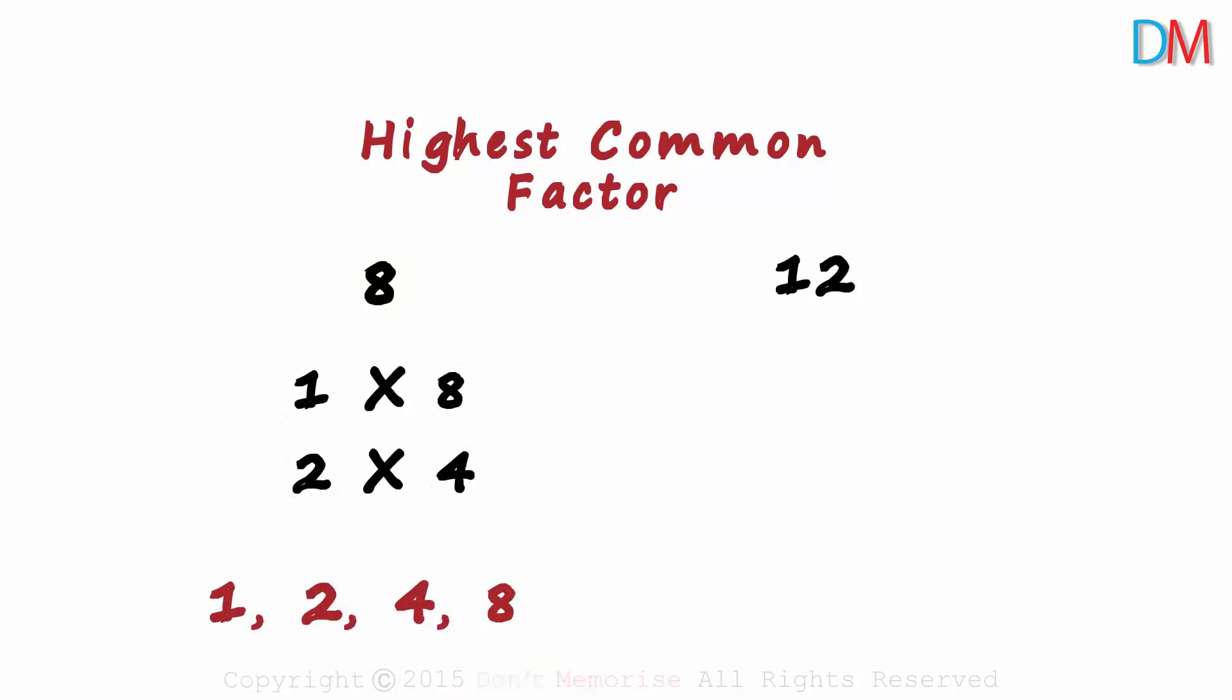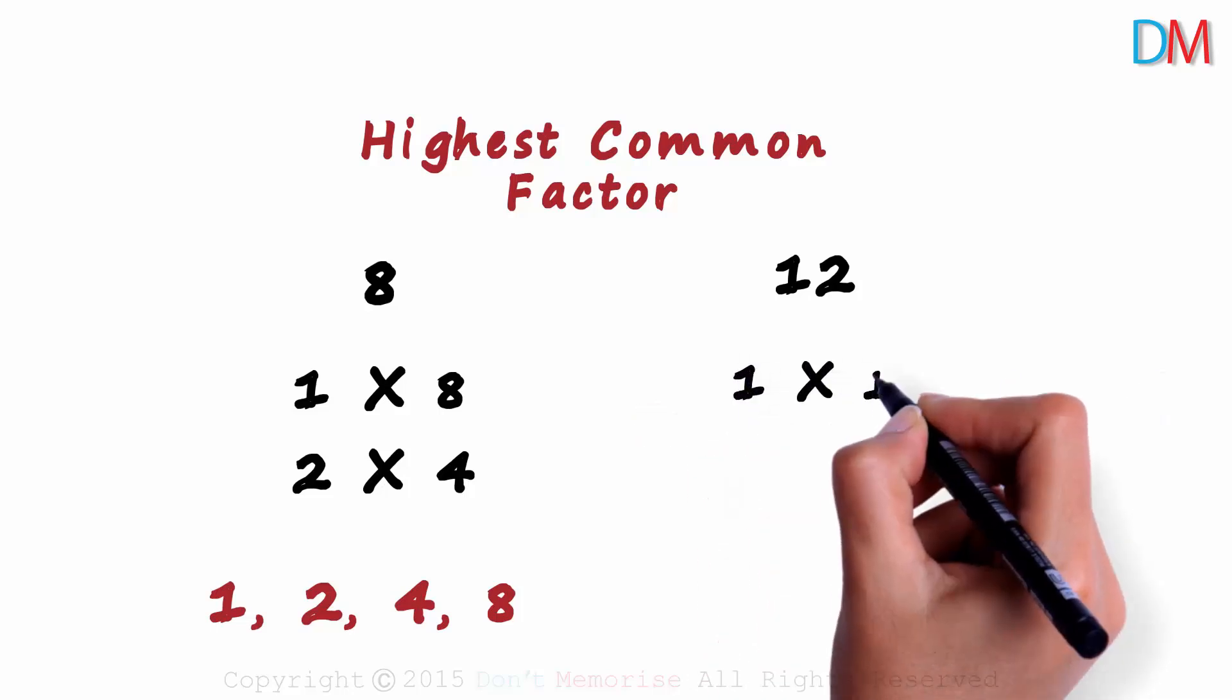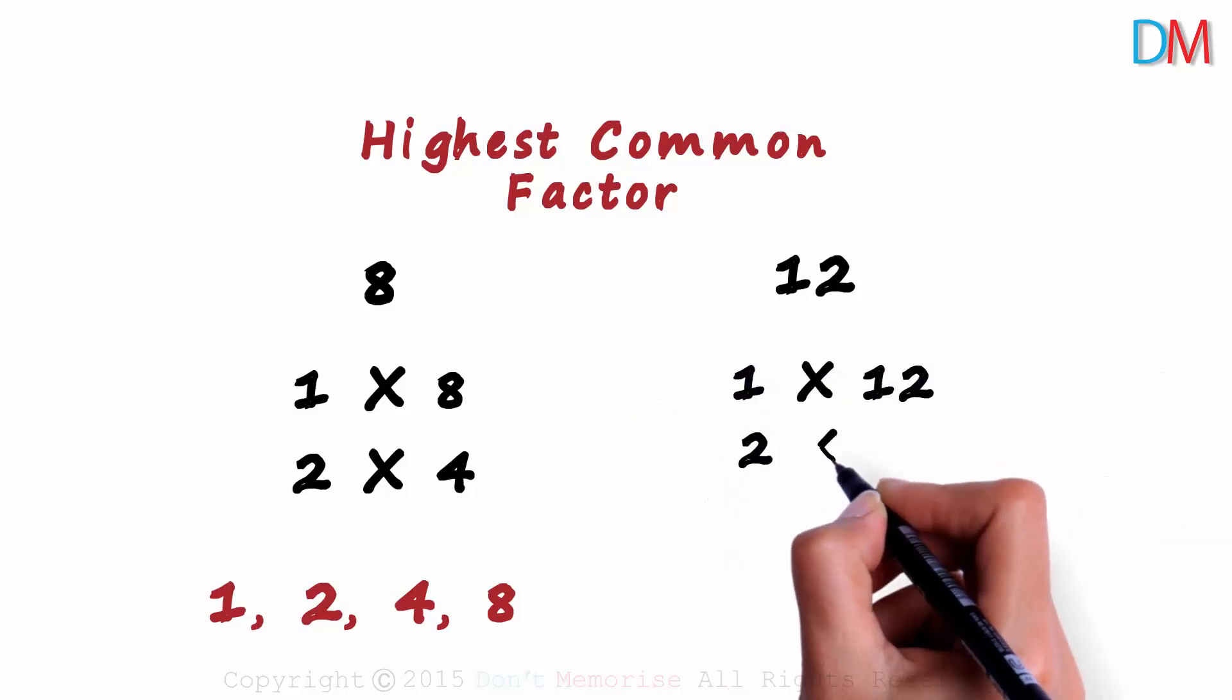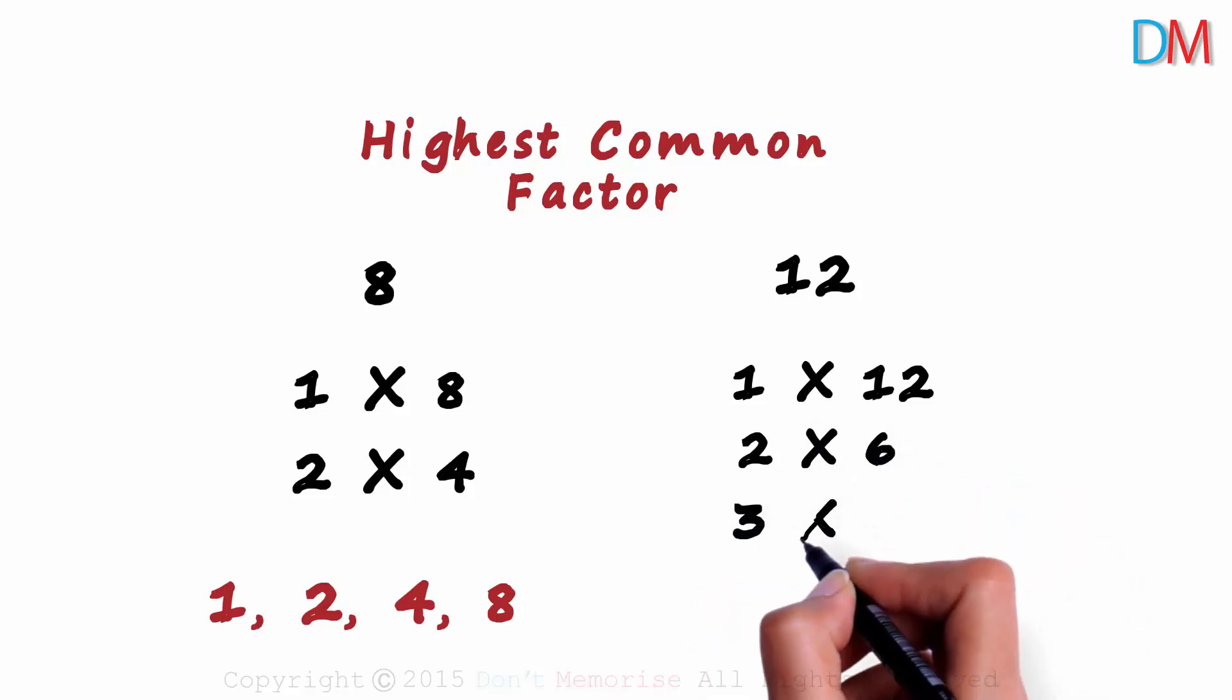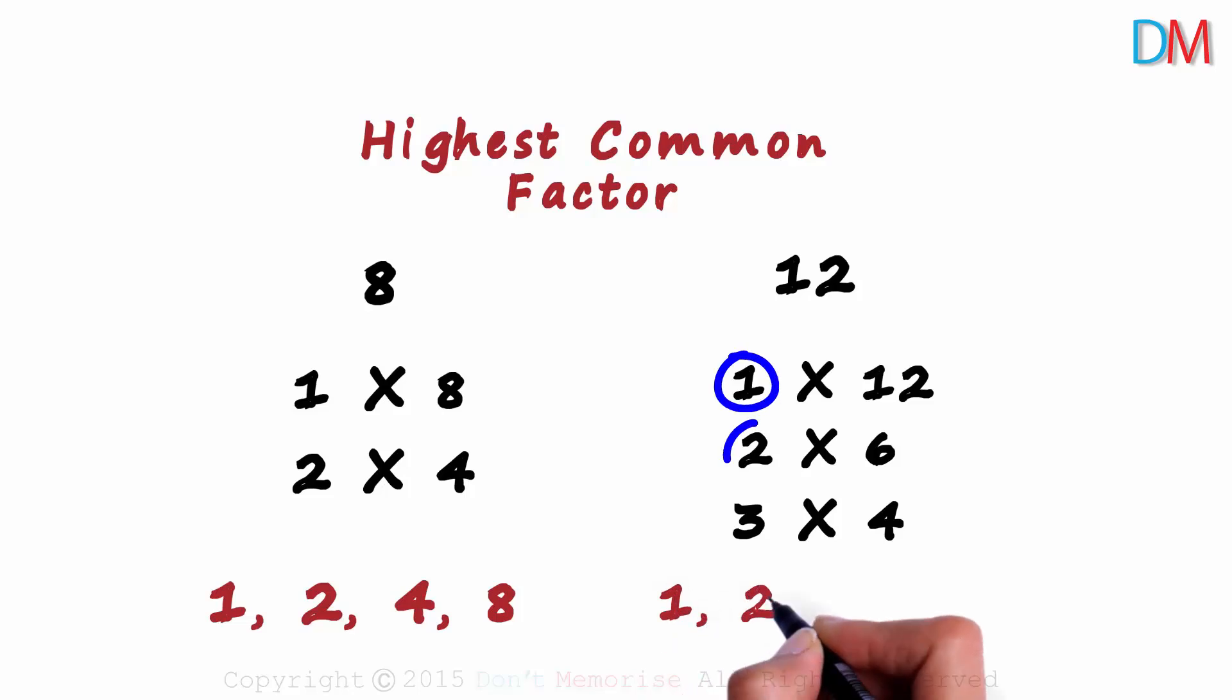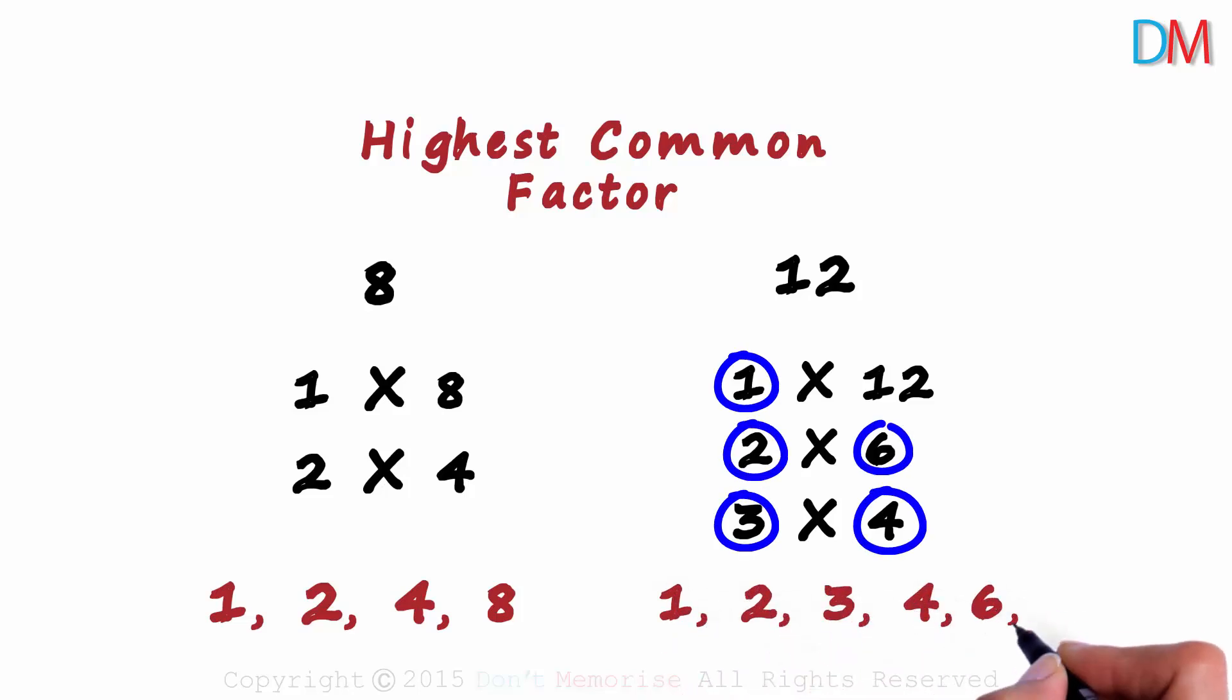Just like we found the factors of 8, why don't you try finding the factors of 12? To find the factors, we write 12 as all possible products of two positive numbers. It can be written as 1 multiplied by 12, 2 multiplied by 6, and 3 multiplied by 4. So the factors of 12 are 1, 2, 3, 4, 6, and 12.